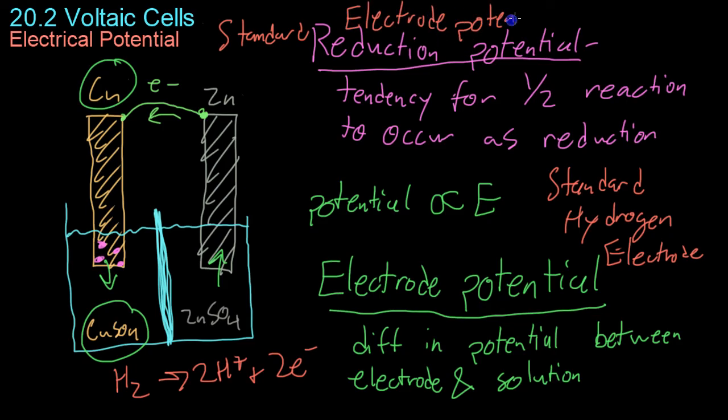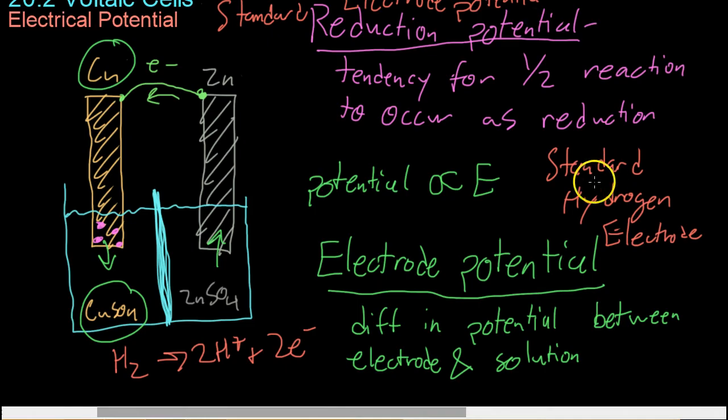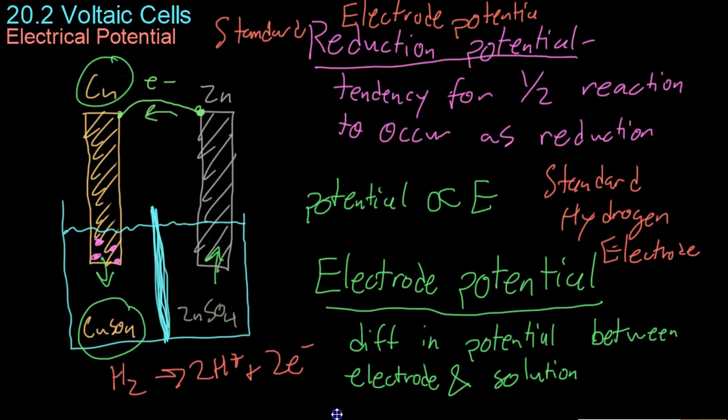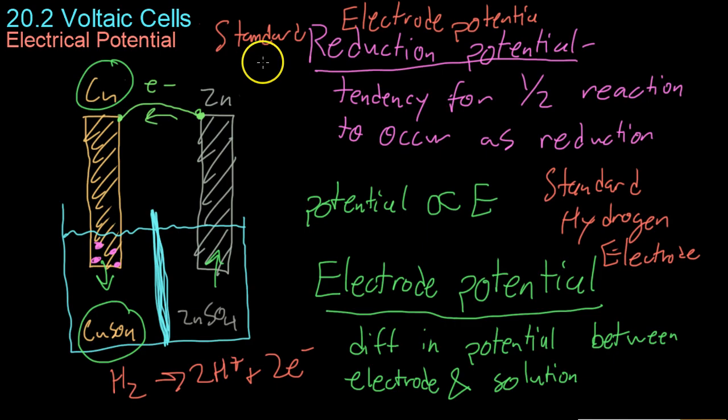All electrodes are measured relative to the standard hydrogen electrode. All half cells are measured relative to the standard hydrogen electrode to get their standard electrode potential.